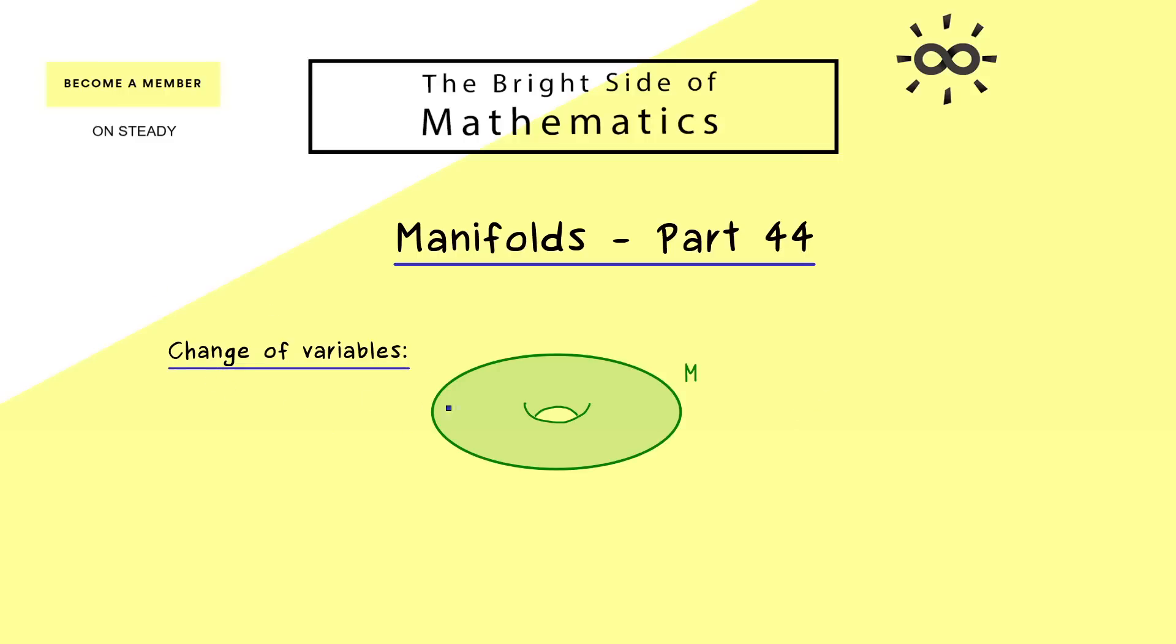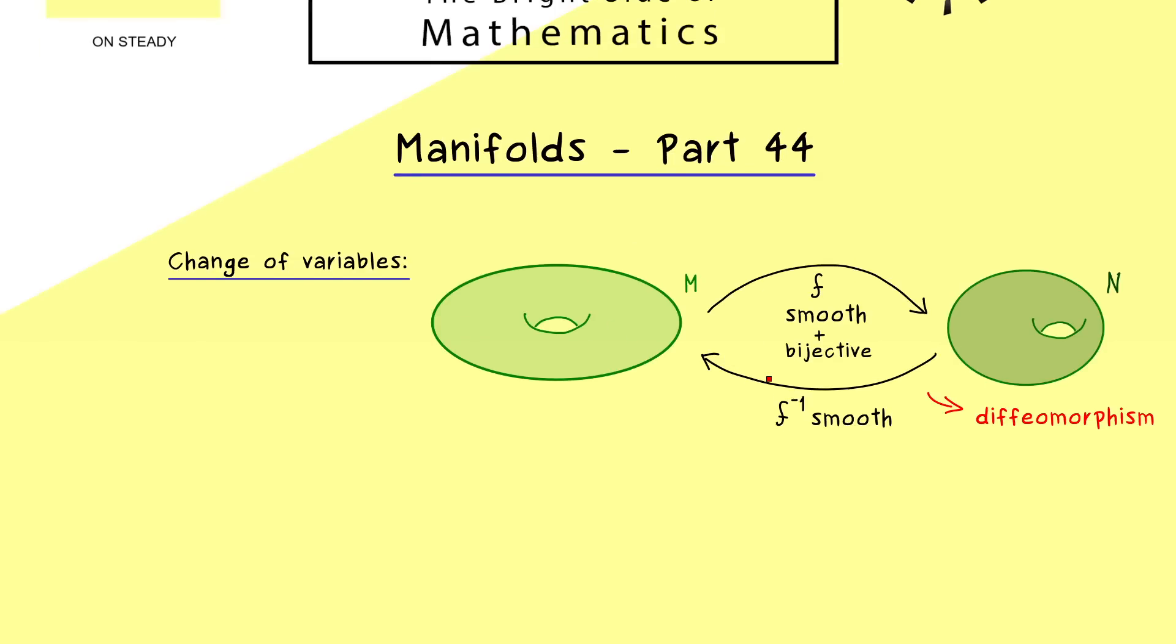And there you might already know that change of variables means that we go from one manifold M to another one N. This means we have a smooth map f between two manifolds. However, this is not enough because it also needs to be bijective such that we can go back from N to M without losing any information. And even there, we need an additional information for f inverse, namely it should also be a smooth map. Hence f is smooth in both directions, and this is what we usually call a diffeomorphism between manifolds. So please remember that for the change of variables formula on manifolds, we need a diffeomorphism.